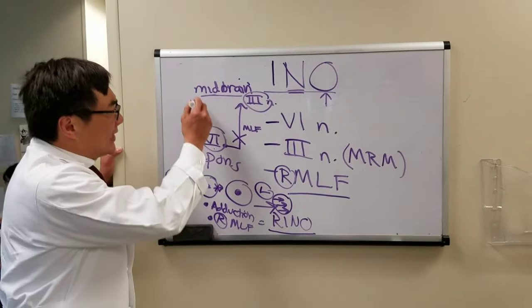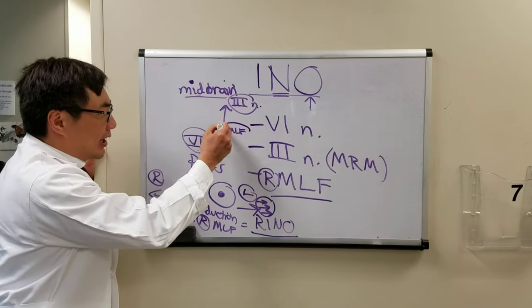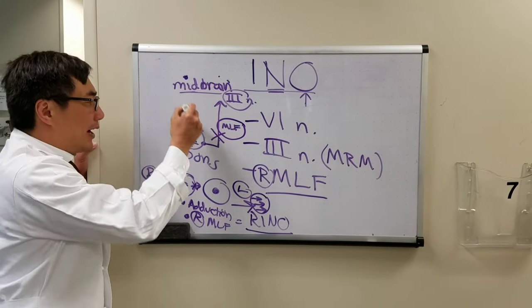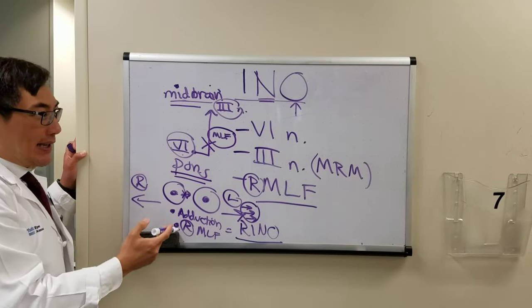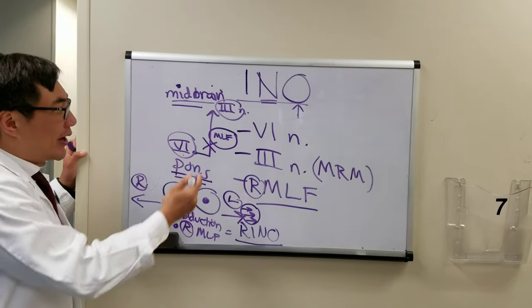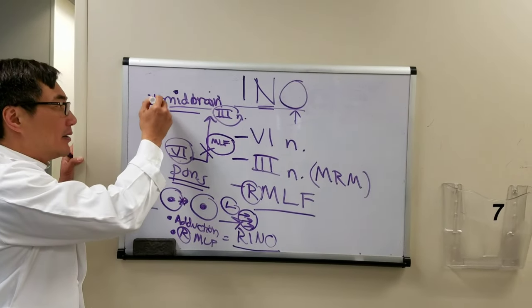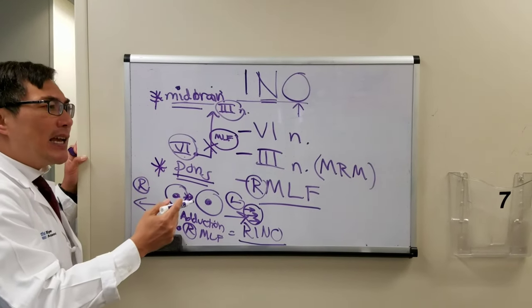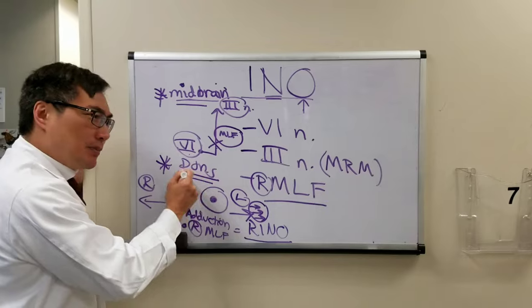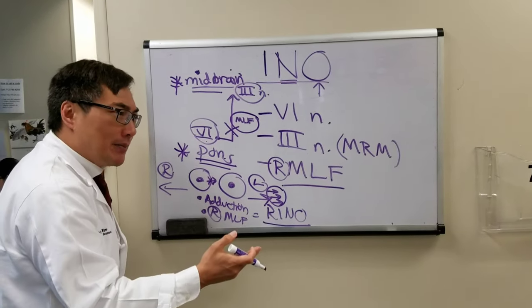Because the lesion could be in the medial longitudinal fasciculus anywhere from the pons all the way to the midbrain, one of the ways that we can try and differentiate whether the lesion is midbrain, a rostral lesion, or pontine, a caudal lesion, is by making this medial rectus muscle fire using different stimuli.